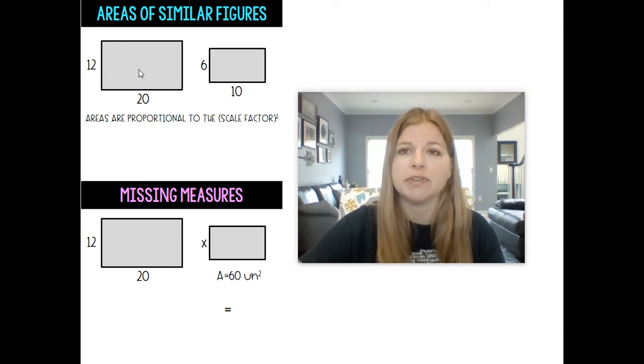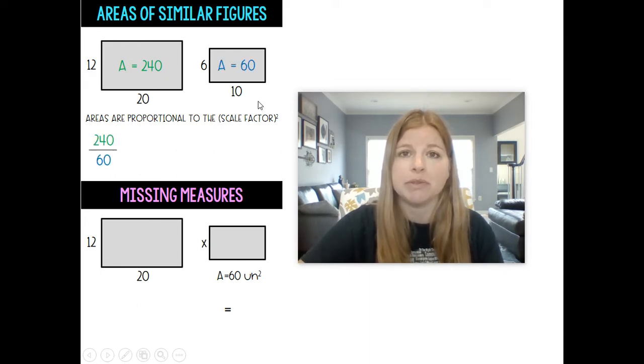The area of this first rectangle 12 times 20 is 240. The area of the second rectangle 6 times 10 is 60. If I set up a ratio of those two areas 240 over 60 it's going to be equal to the scale factor from one rectangle to the next so 12 over 6 or 20 over 10 squared.